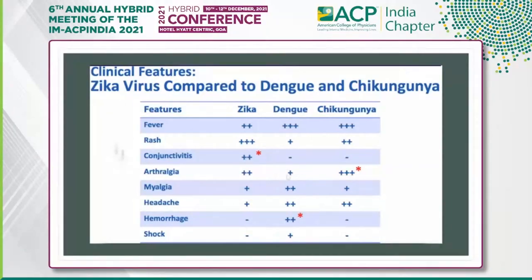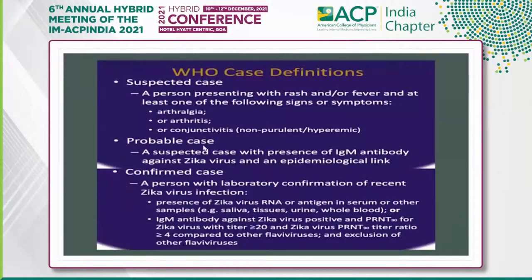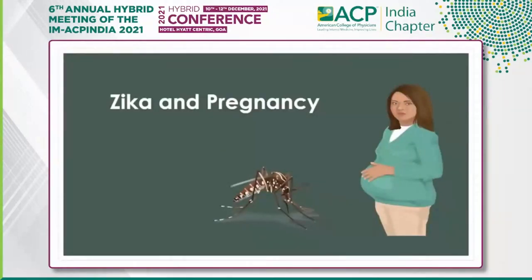In dengue, body ache is common but joint pain is less severe; myalgia and backache are very common in dengue, and dengue can lead to complications and death from dengue shock syndrome. Cases are classified as confirmed, probable, or suspected: a suspected case presents with fever and at least one of arthralgia, arthritis, or conjunctivitis. A probable case has positive IgM antibodies. A confirmed case requires positive viral culture or PCR.